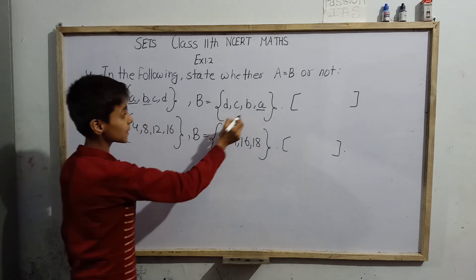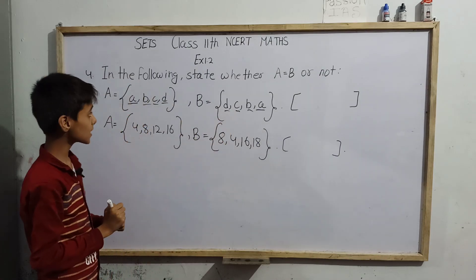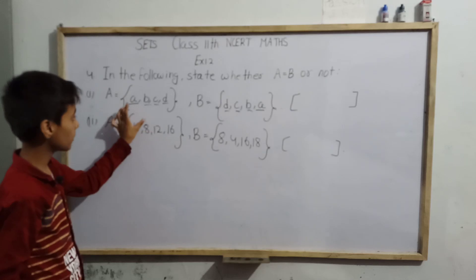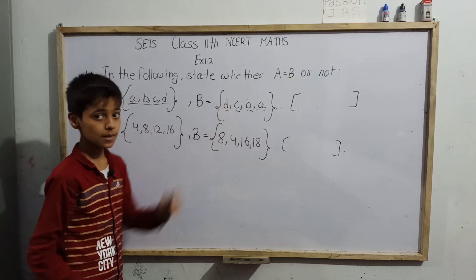B is present in both. C is present in both also, and D and D. Here we have all elements as common. Number of elements in A: there are 4, and number of elements in B: there are 4.